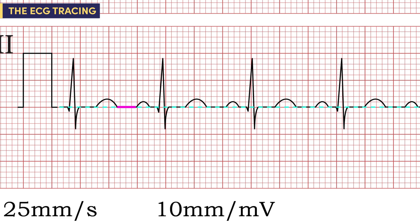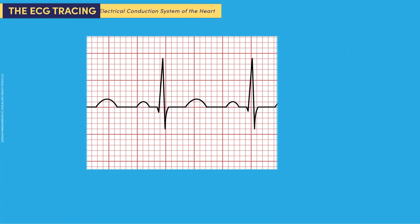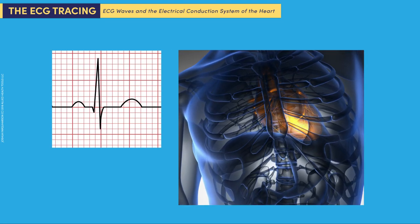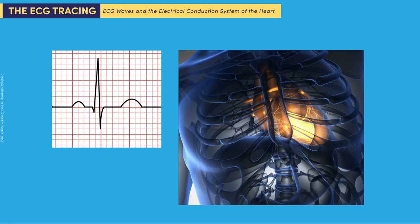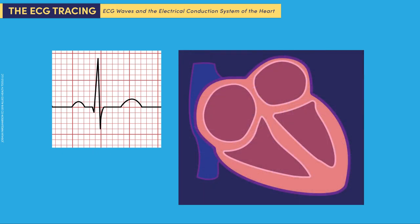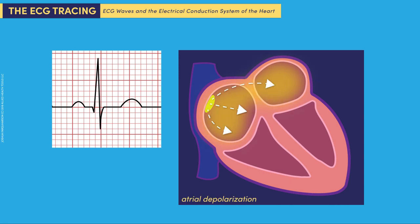We will use the baseline as our starting point when measuring the waveforms. Here's a brief summary of the electrical conduction system of the heart and how it relates to the waveforms we see on the ECG. During a normal heartbeat, the electrical activity starts in a small patch of pacemaker cells called the sinoatrial node. The SA node is located in the right atrium. When the impulse activates the atria, it produces a small blip on the ECG called the P wave.